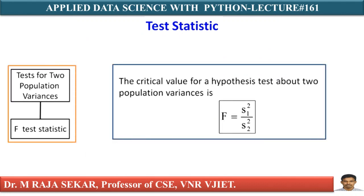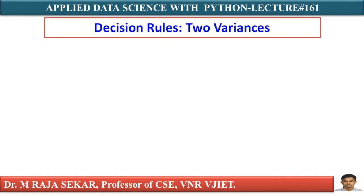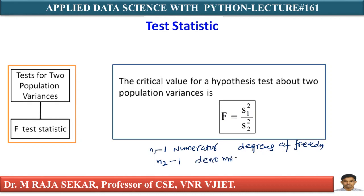The critical value for the hypothesis test about two population variances uses F equal to S1 squared by S2 squared, where nu 1 is the numerator degrees of freedom (N1 minus 1) and nu 2 is the denominator degrees of freedom (N2 minus 1). This F has N1 minus 1 numerator degrees of freedom and N2 minus 1 denominator degrees of freedom.